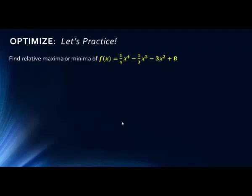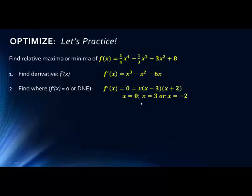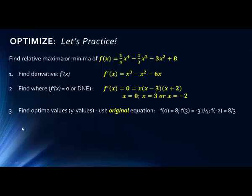Now it's your turn to try on your own. Hit pause and go through the four steps: find the derivative; set the derivative equal to zero to find the critical values of x; plug those x values back into the original equation to find the y values; then figure out what's happening before and after — positive then negative, or negative then positive — to determine whether each optimum point is a maximum or minimum.